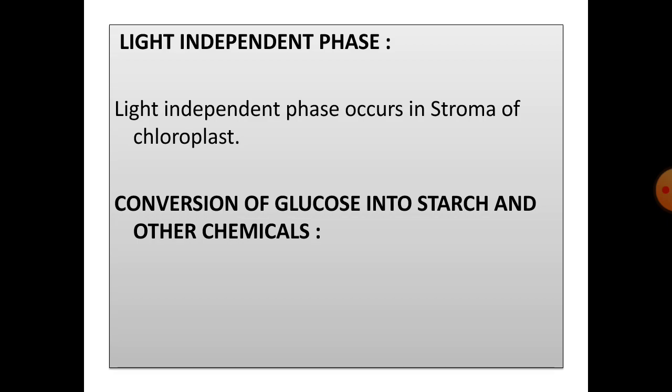Light independent phase. This phase is also known as dark phase or Calvin cycle. This phase occurs in the stroma of chloroplast, and glucose gets produced in this phase only.